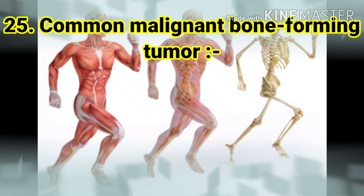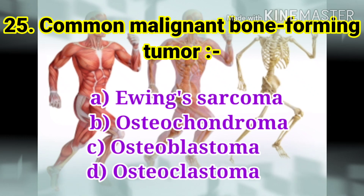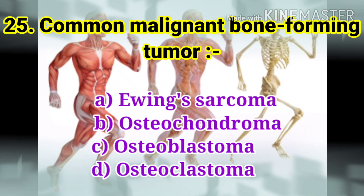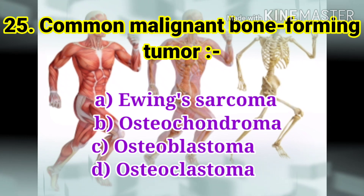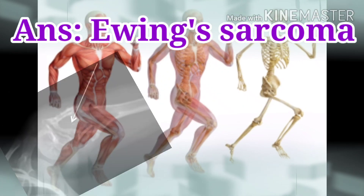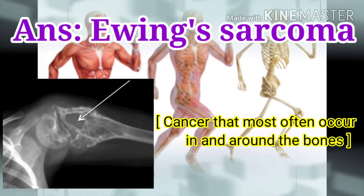The next and last question: common malignant bone forming tumor. The options are Ewing's sarcoma, osteochondroma, osteoblastoma, and osteoclastoma. The answer is Ewing's sarcoma. Ewing's sarcoma is a cancer that most often occurs in and around the bones, typically occurring in children and young adults.